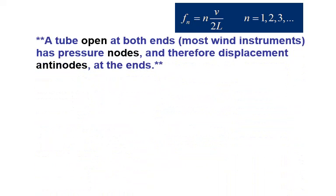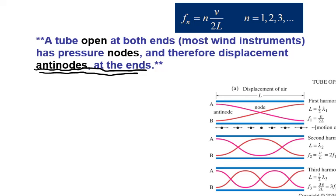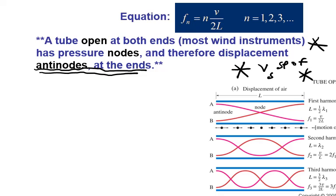Using nv / 2L gives all the harmonics for a tube open on both ends. An important note: you must have anti-nodes at both ends, with nodes in the middle — every additional harmonic will still have anti-nodes at the ends. You can have first, second, third, fourth, fifth harmonics and so on. The big key point: v is the speed of sound in air, because the waves are traveling through air inside the instrument.